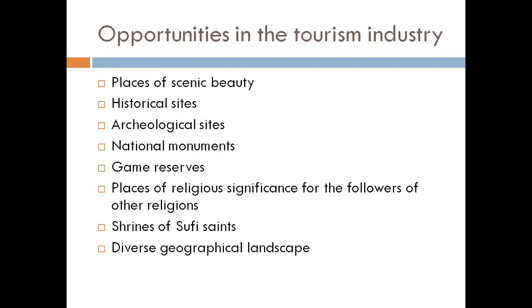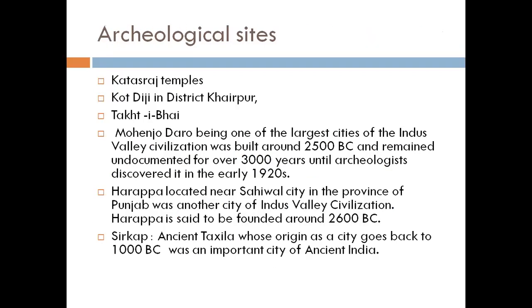There are also archaeological sites offering opportunities in the tourism industry: Katasraj Temples, Kot Diji, Taxila in Mardan, Mohenjo-daro, Harappa, and Sirkap. Mohenjo-daro, one of the largest sites of the Indus Valley Civilization, was built around 2500 BC and remained undiscovered for over 3,000 years until archaeologists found it in the early 1920s. Harappa, located near Sahiwal in Punjab, was founded around 2600 BC. Sirkap is a Taxila city whose origin goes back to 1000 BC.